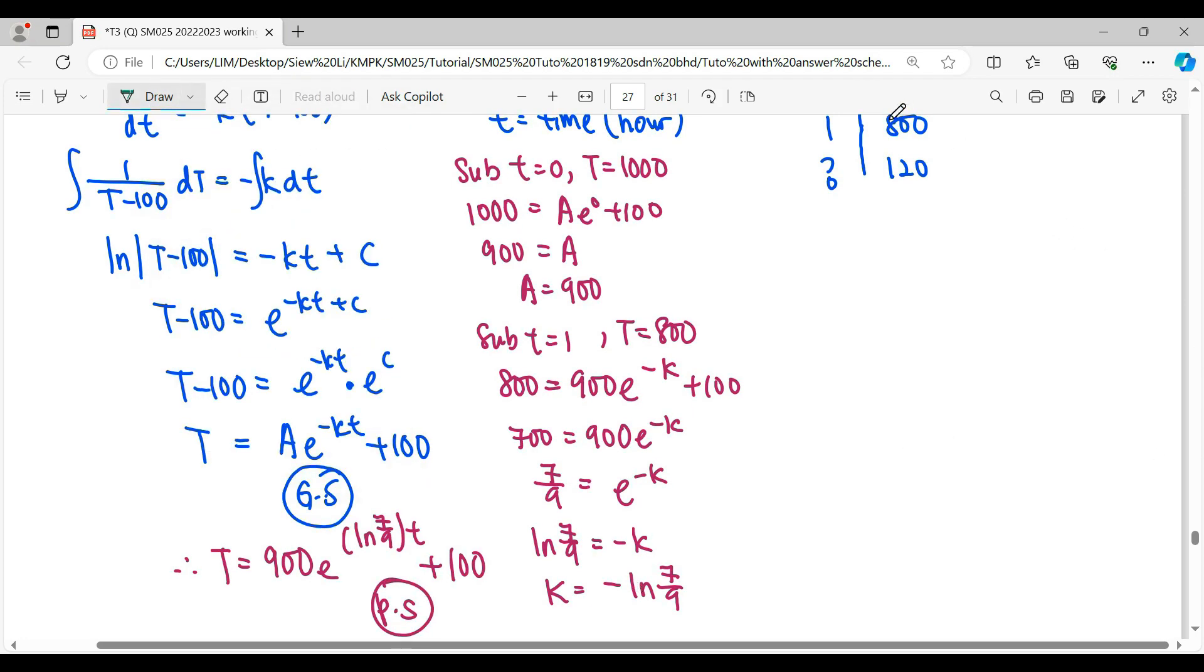For the last step, we substitute temperature to be 120 so that we can find out what is our time. To simplify this, 100 we move back becomes minus. Then divide by 900, it will be 2 over 90. When we move back, the exponential will become ln. Of course, 2 over 90 you can simplify, become 1 over 45. Or you want to maintain, also can.